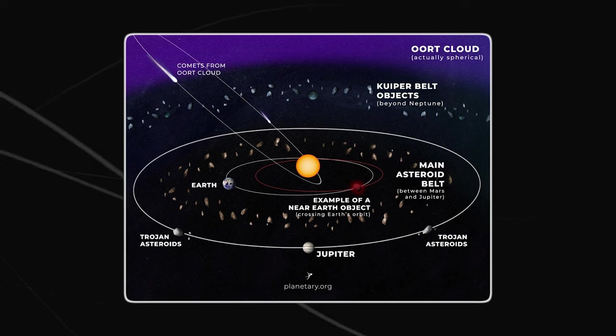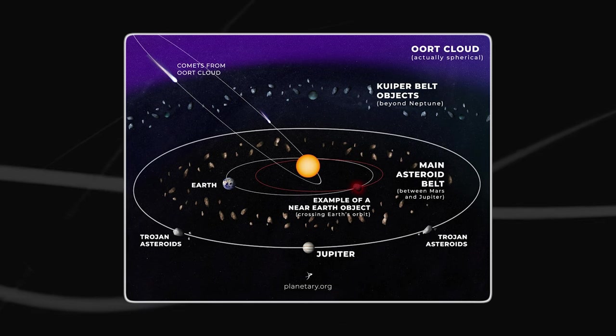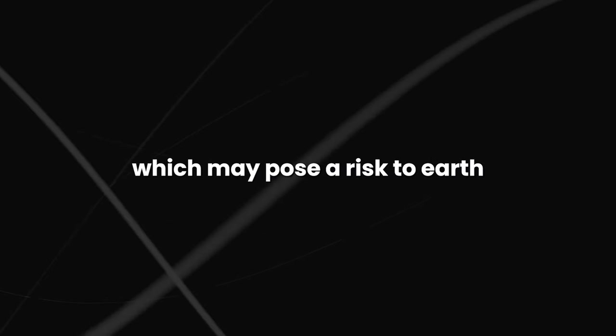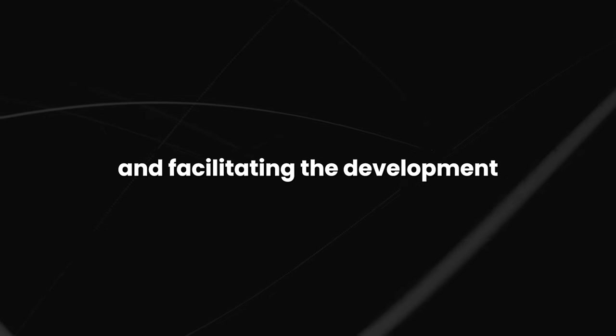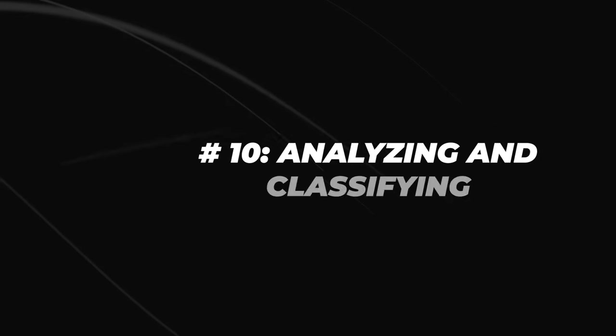AI is also used to model the orbits of asteroids and comets, providing information about which may pose a risk to Earth, and facilitating the development of plans to deflect or destroy dangerous objects. Number ten: analyzing and classifying astronomical data.